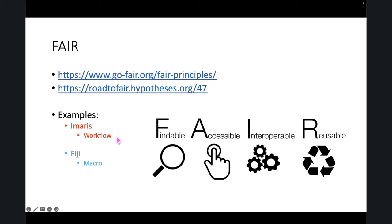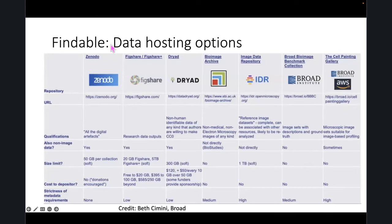FAIR principles: Findable, Accessible, Interoperable, Reusable — read about them. One issue with being interoperable and reusable is if you use image analysis software that has a workflow instead of a macro, and people can't get access to it because it's paid software, they're less likely to reproduce your results. For being findable, there are a bunch of data hosting options. Zenodo is completely free and you can put up to 50 gigabytes per collection.